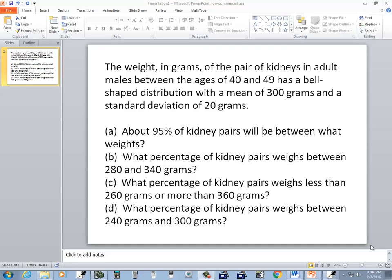Let's take a look at this problem. The weight in grams of a pair of kidneys in adult males between ages 40 and 49 has a bell-shaped distribution with a mean of 300 and a standard deviation of 20.